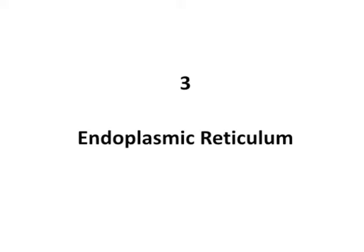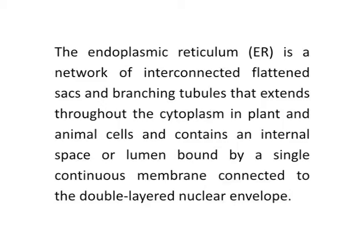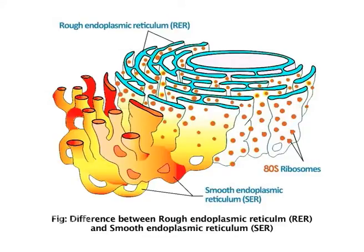The next subcellular organelle is the endoplasmic reticulum. The endoplasmic reticulum, or ER in short, is a network of interconnected flattened sacs and branching tubules that extends throughout the cytoplasm in plant and animal cells and contains an internal space or lumen bound by a single continuous membrane connected to the double-layered nuclear envelope. Endoplasmic reticulum may be smooth endoplasmic reticulum or rough endoplasmic reticulum. The rough endoplasmic reticulum contains 80S ribosomes attached to their membrane. The smooth endoplasmic reticulum plays a role in lipid biosynthesis, carbohydrate metabolism and detoxification of toxic compounds, while protein synthesis and transport occurs on the rough endoplasmic reticulum.